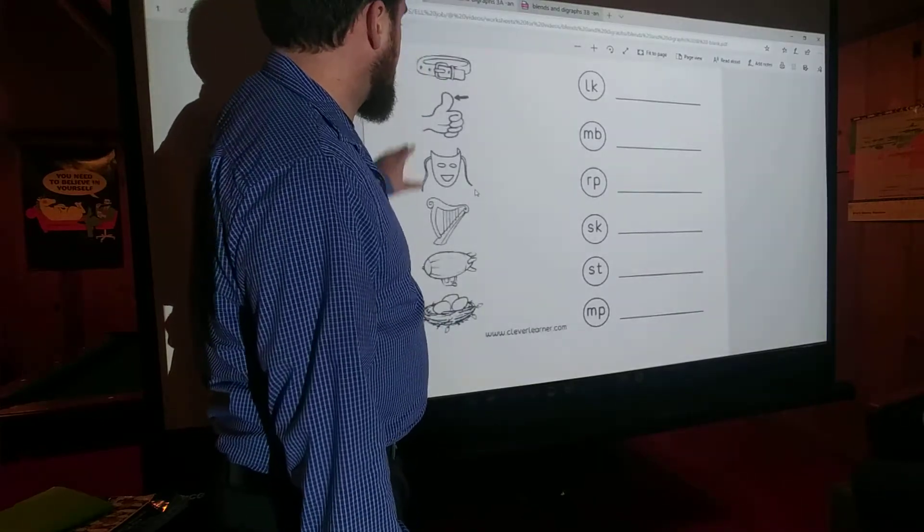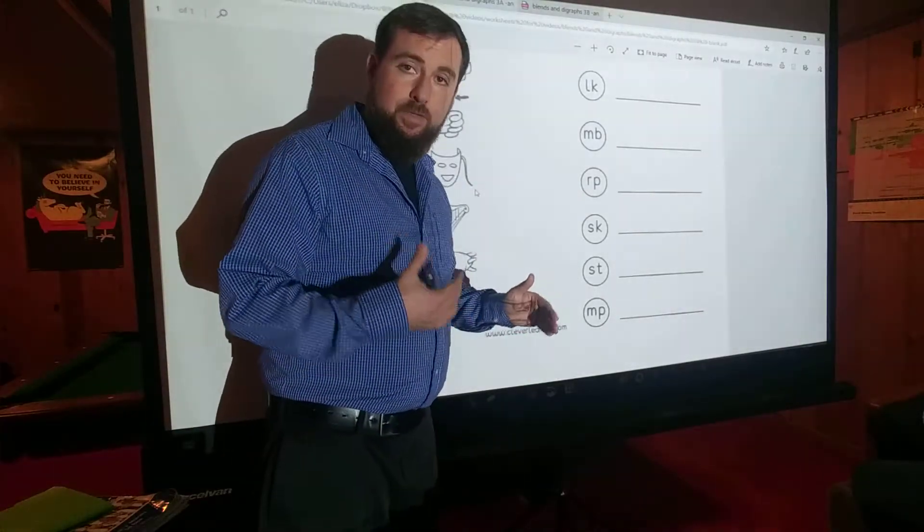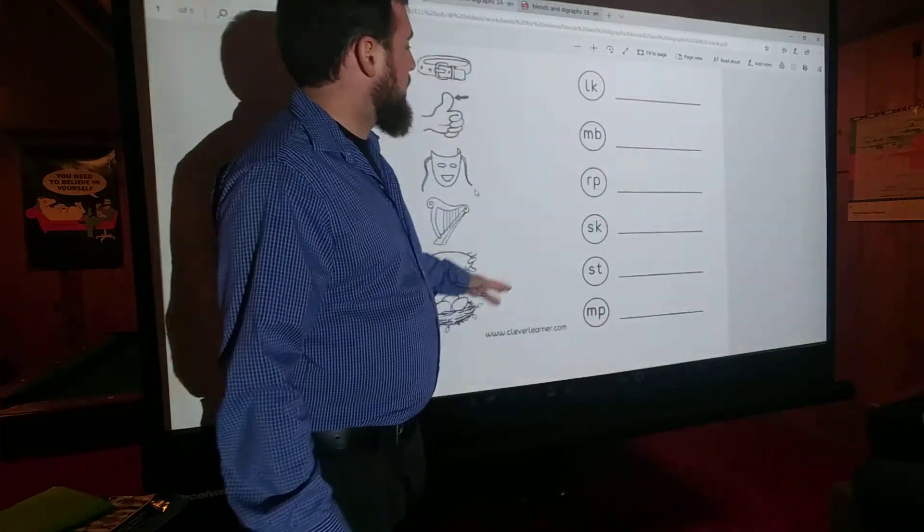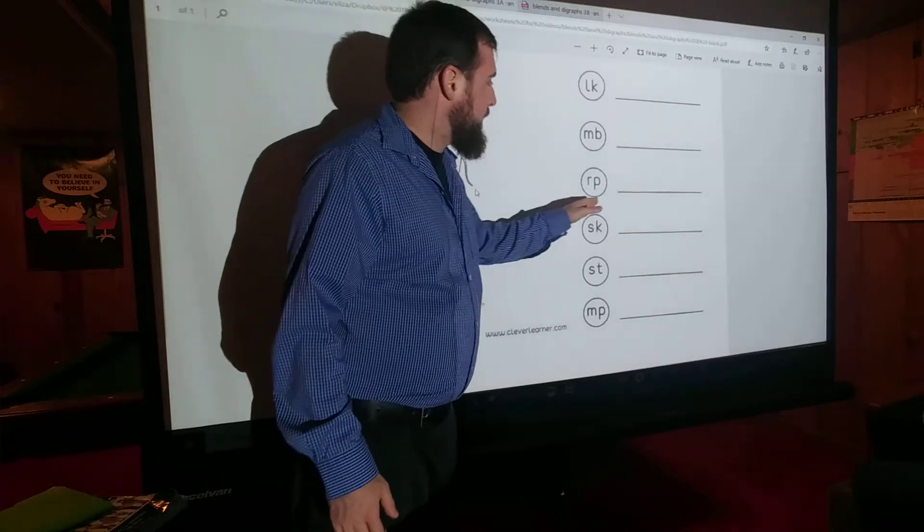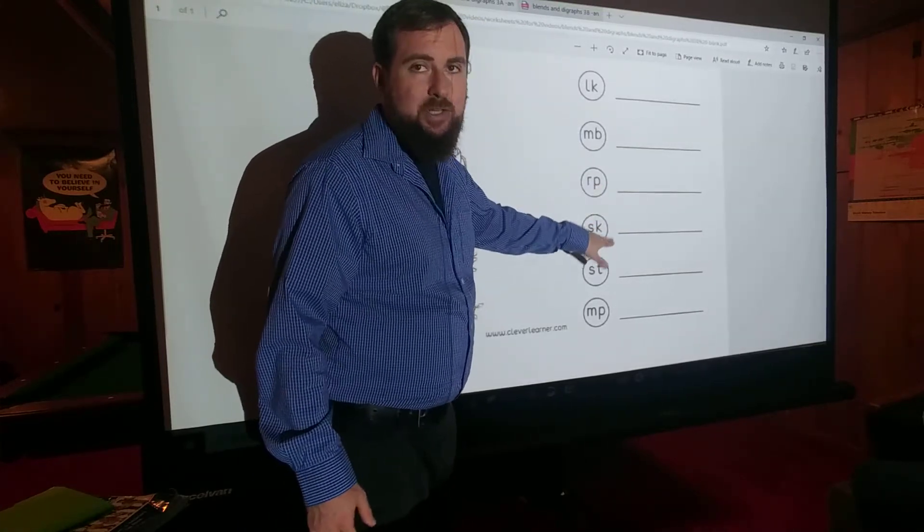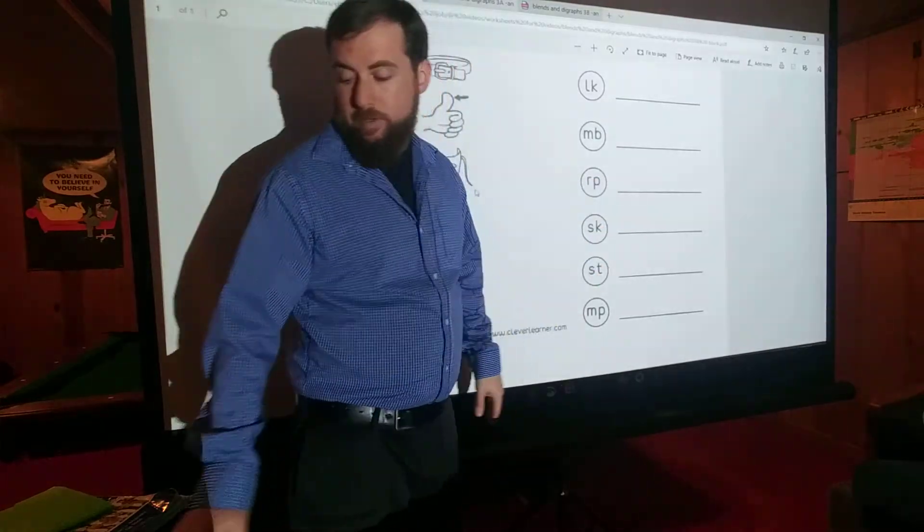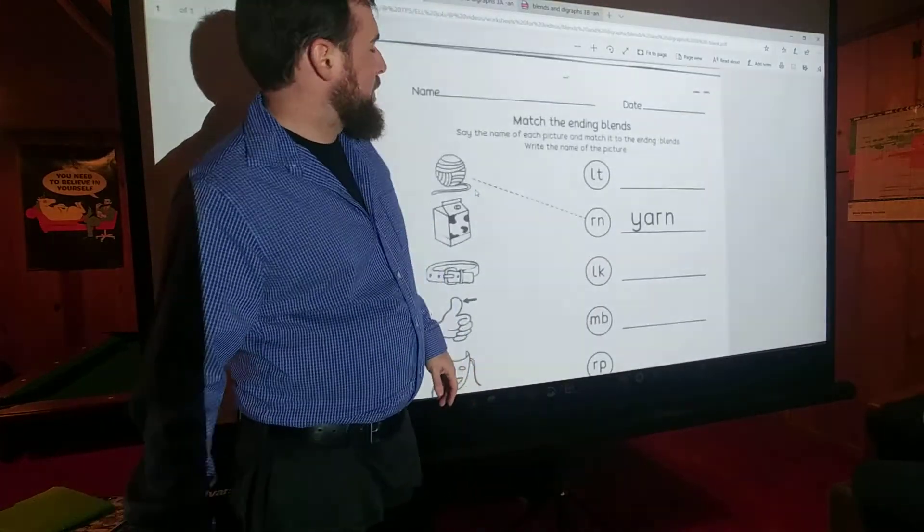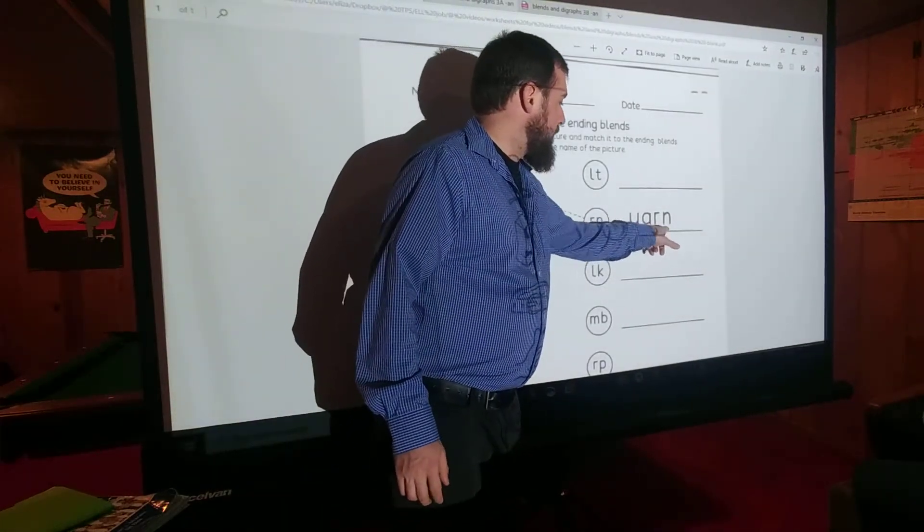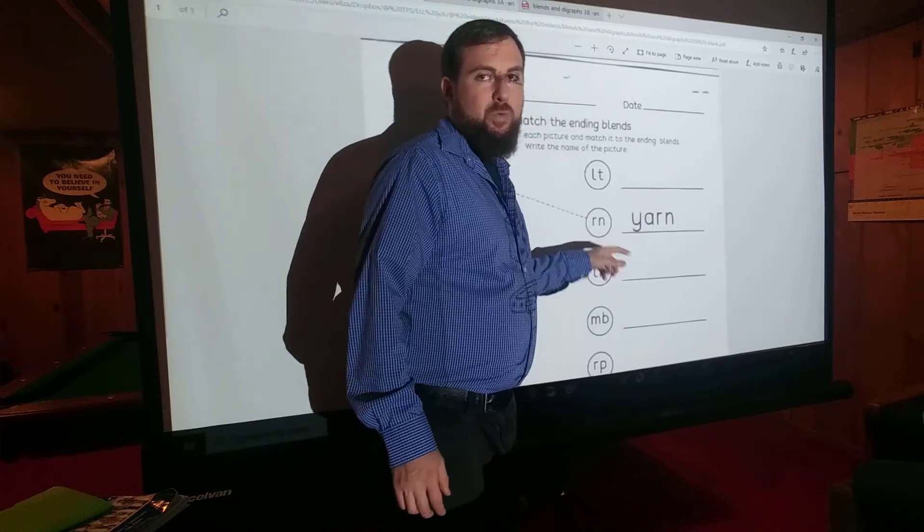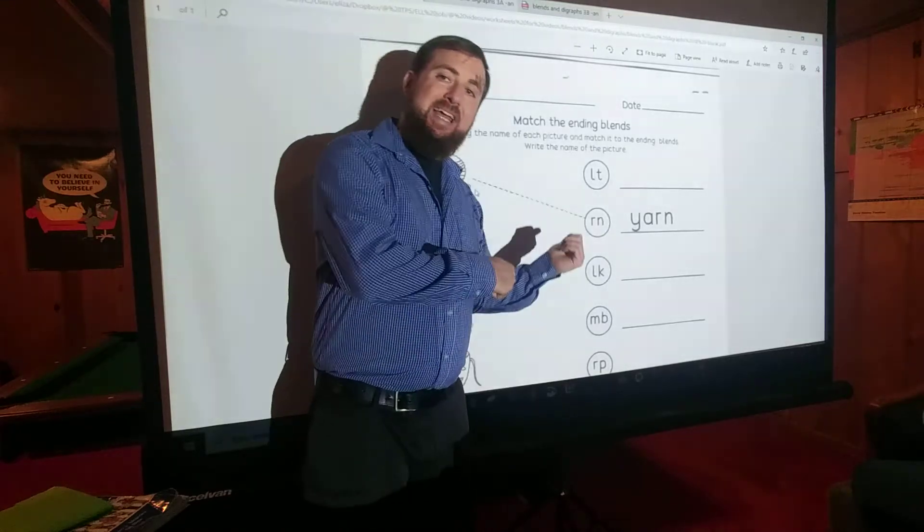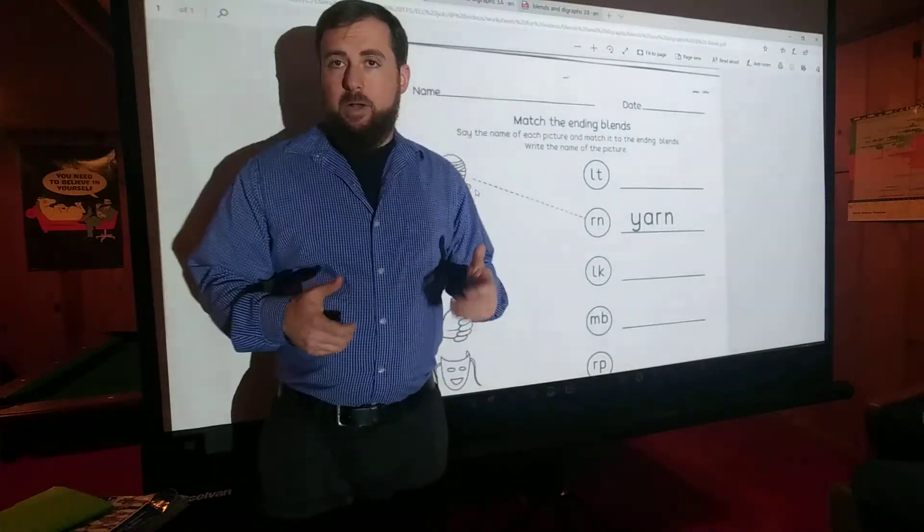So using those, you can rewind the video and play that again if you need to hear that again. Draw lines to each one that completes the word. And then write the completed word. These will be the sounds at the end of the word. Remember, we're practicing the end of the word. So like over here, this was yarn. Put RN. Y-A-R-N. See, the RN is at the end of the word this time. So we're looking at the end. So pause the video and complete the activity. I'll wait here.